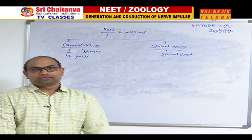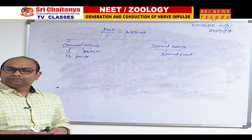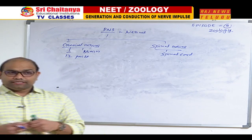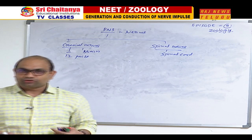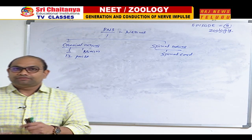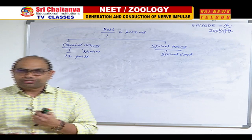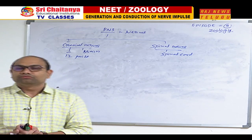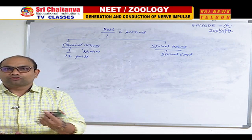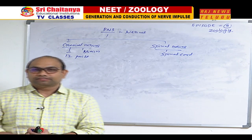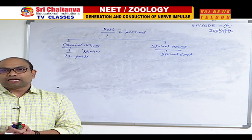The 12 cranial nerves are: first — olfactory nerve; second — optic nerve; third — oculomotor nerve; fourth — trochlear (pathetic) nerve; fifth — trigeminal; sixth — abducens; seventh — facial; eighth — auditory nerve; ninth — glossopharyngeal; tenth — vagus; eleventh — accessory nerve; twelfth — hypoglossal nerve.